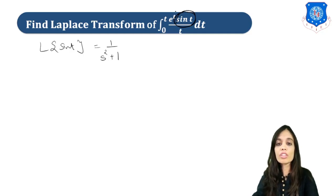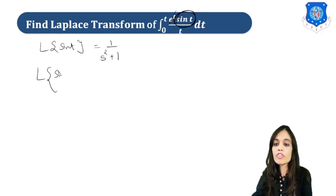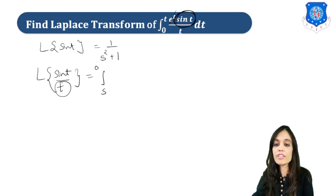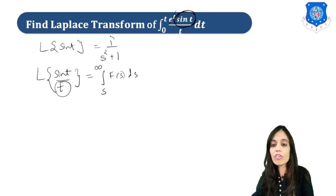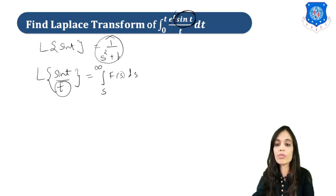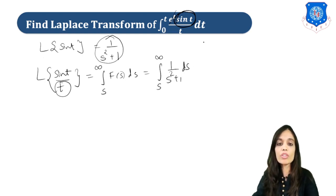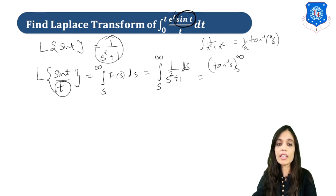Apply e at last. First, find the Laplace of sin(t)/t. Whenever you have t in the denominator, the formula is the integral from s to infinity of F(s) ds. Here F(s) is 1 upon s squared plus 1, so it equals the integral from s to infinity of 1 upon (s squared plus 1) ds. Using the formula integral of 1/(x² + a²) = (1/a) tan⁻¹(x/a), the integration gives tan⁻¹(s) with limits s to infinity. Putting infinity gives π/2, and putting s gives tan⁻¹(s).